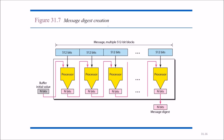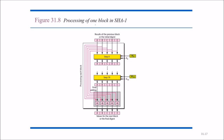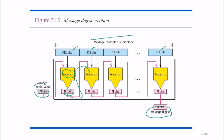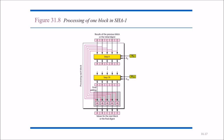In SHA-1 message digest creation, we start with an initial value of n-bits. The message is divided into multiple 512-bit blocks, each passed through a processor. The result feeds into the next processor, and finally we obtain an n-bit message digest. Within each block processing step, the values A, B, C, D, E are used, and at each step W0, K0 keys are applied. This goes for 80 rounds (step 0 to 79). Final addition is done by combining the initial values with the output values to produce results for the next block or the final digest.